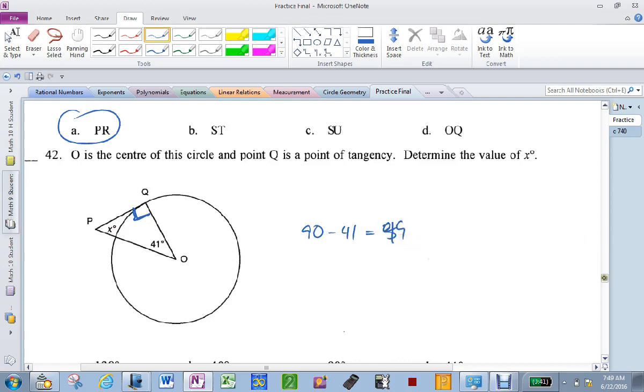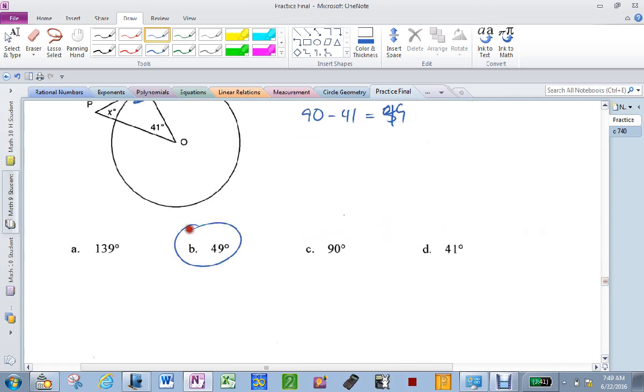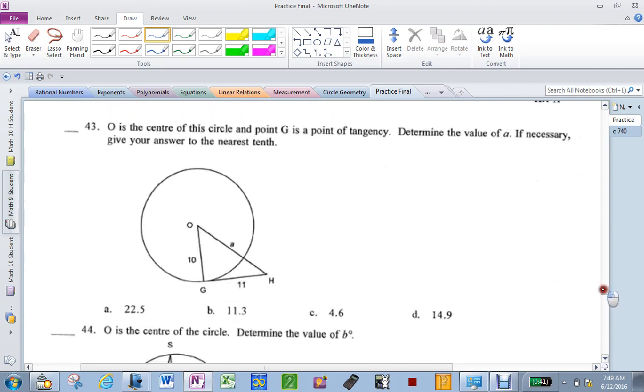49. That's 90. You've done this question to death a million times. That's Pythagoras. 10² plus 11² equals a². Square root that. 14.9.